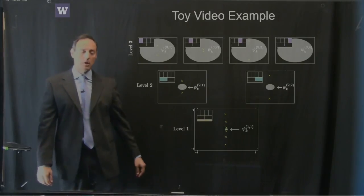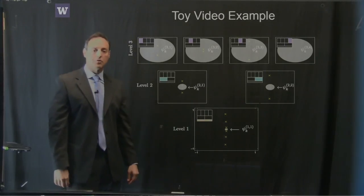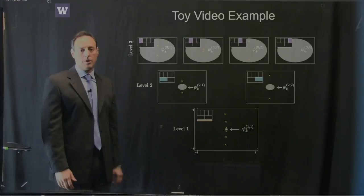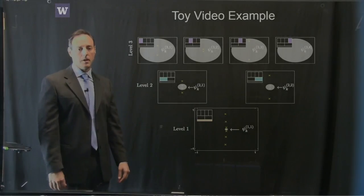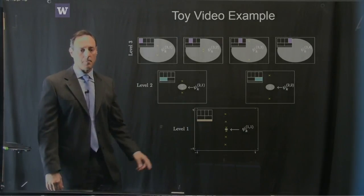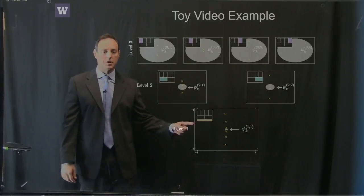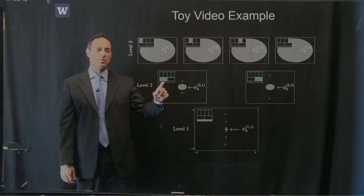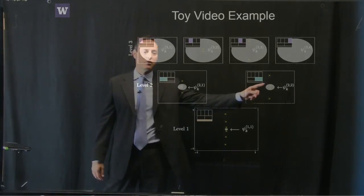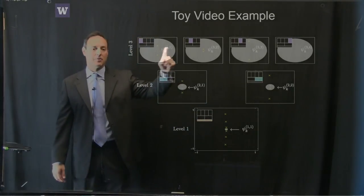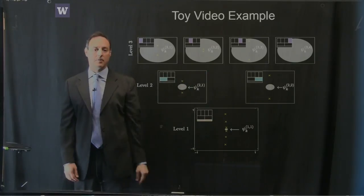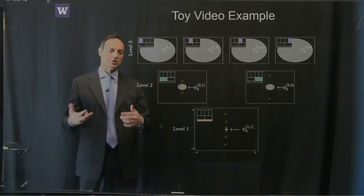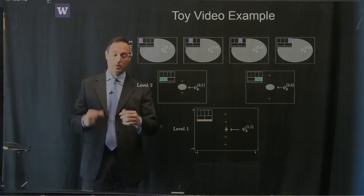You can also look at the decomposition from the original multi-res picture: modes at level one, level two in the first window, level two in the second window, level three at different windows — giving exactly the mode structure for that toy example.